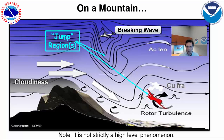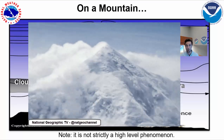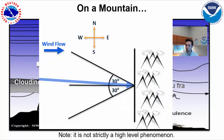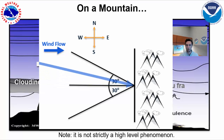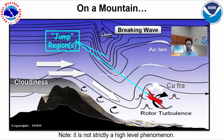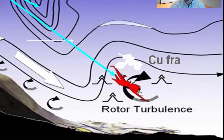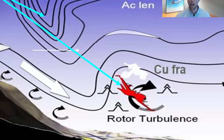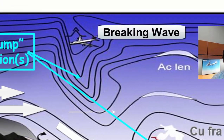So when applying this to a mountain, turbulence can occur when the wind flow cutting over a mountainous region is (a) strong enough and (b) within 30 degrees perpendicular to those ridge tops, often producing a combination of what we call rotor waves at the lower altitudes and breaking waves at the higher altitudes.